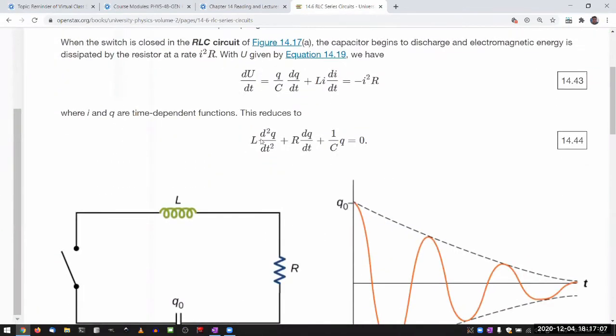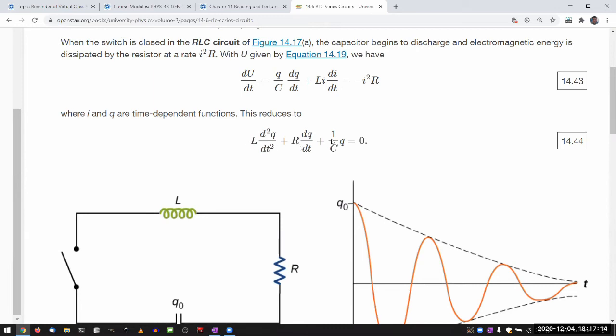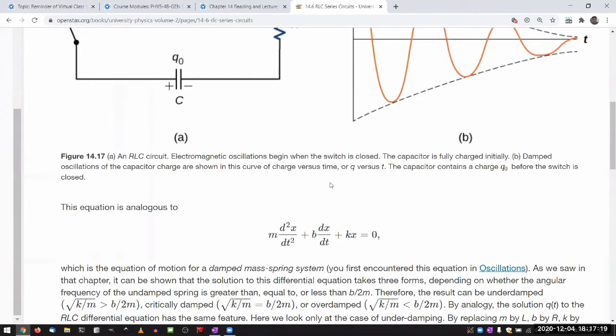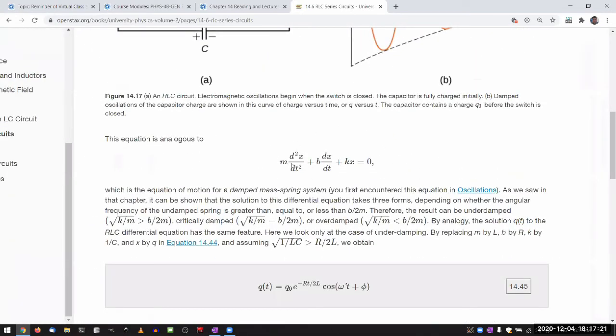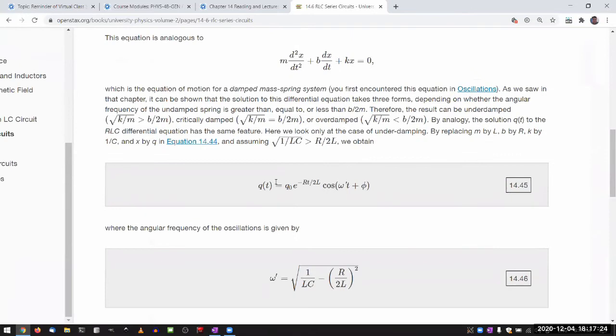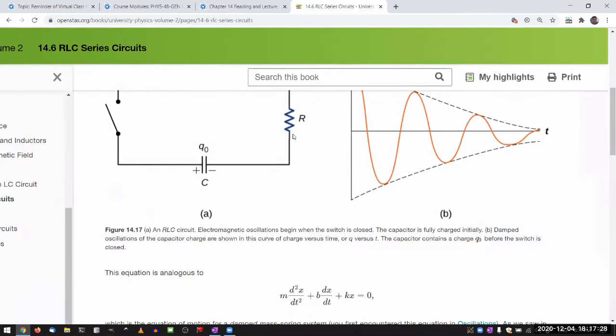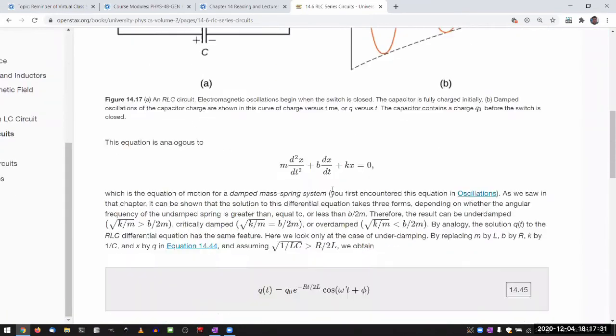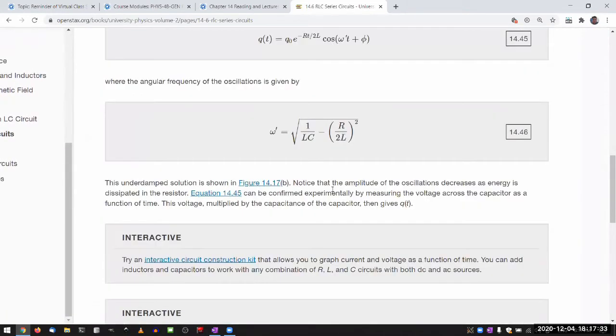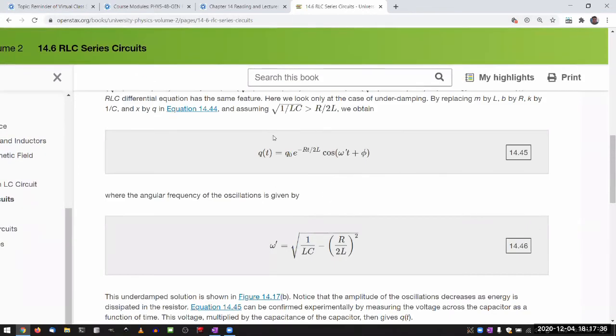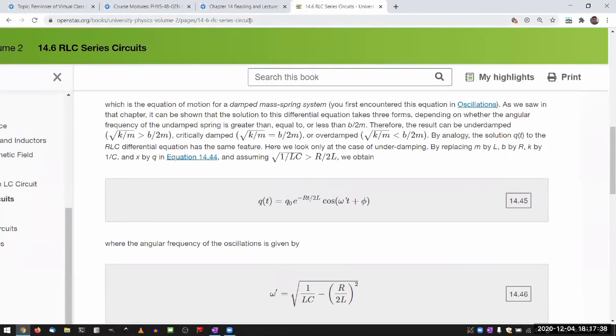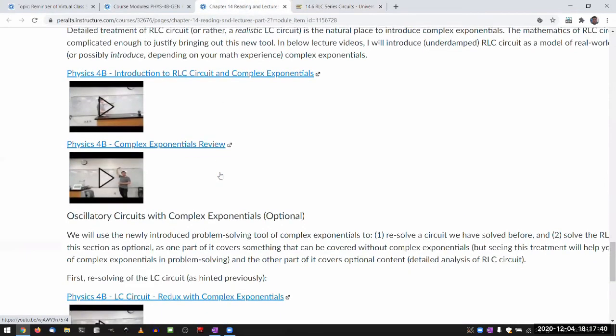So even though the text wrote down this beautiful equation of motion. In fact, if you set R equal to zero, this is exactly the LC circuit equation of motion. And they do basically nothing with it. I mean, they are saying that it's analogous to this. And then just they tell you the answer. They don't even plug it into the formula to see or plug it into the differential equation to see if it's a solution. So I do all that, but not using this form, because that form is a nightmare to work with, but using the complex exponential.